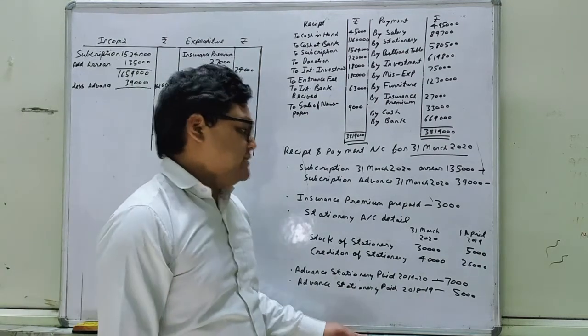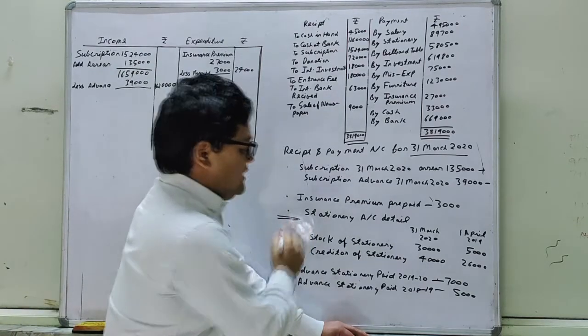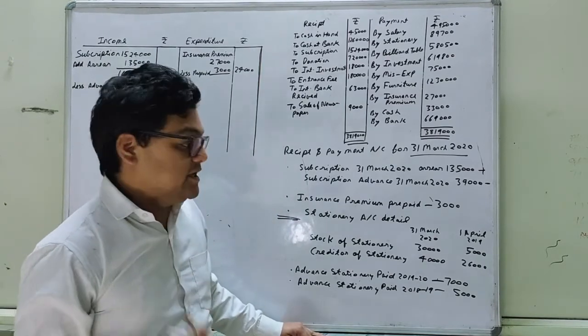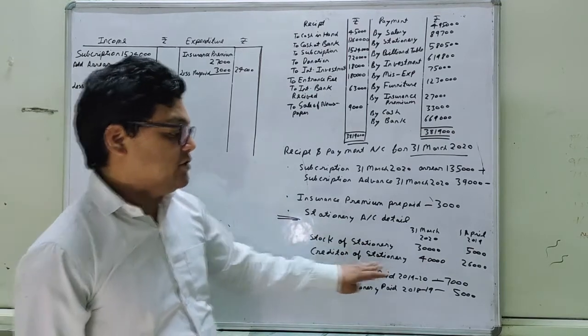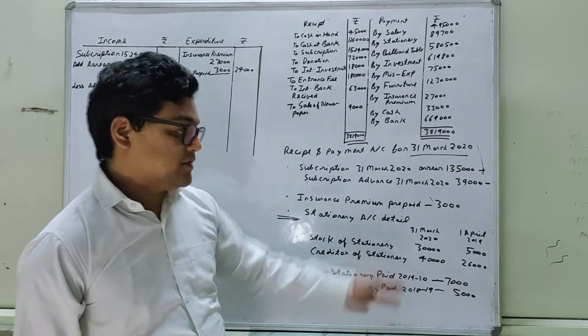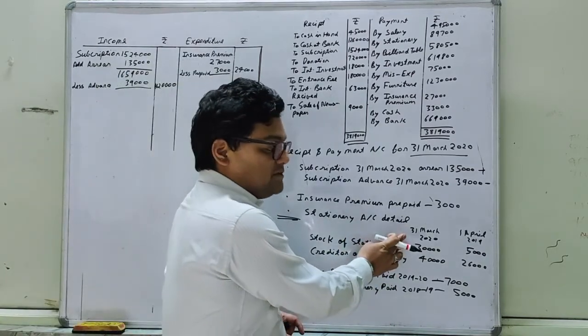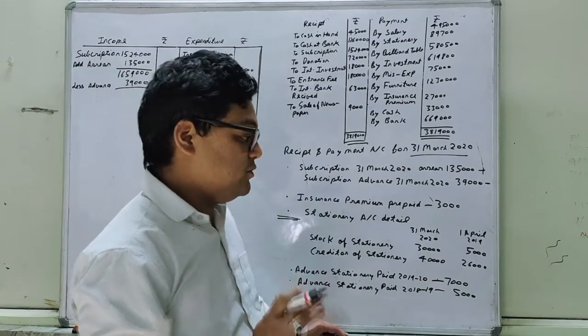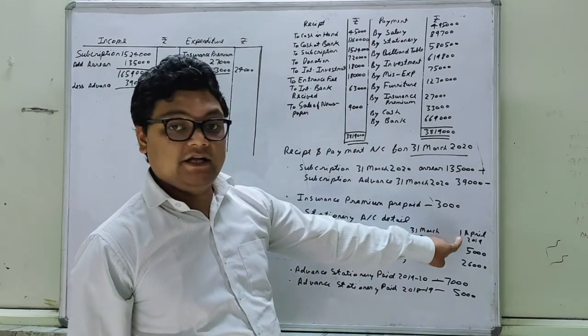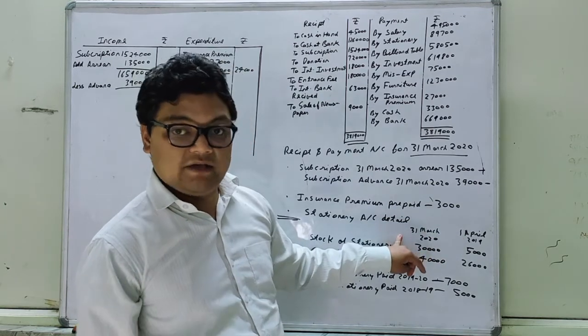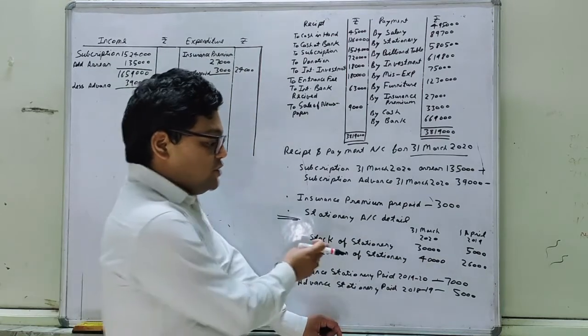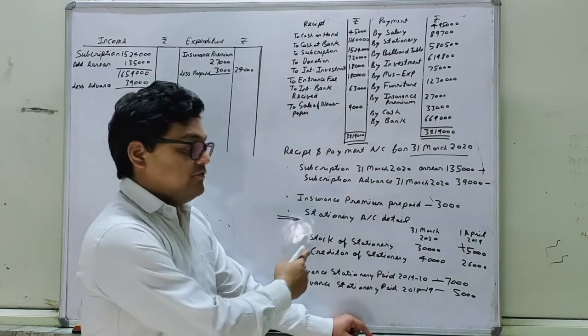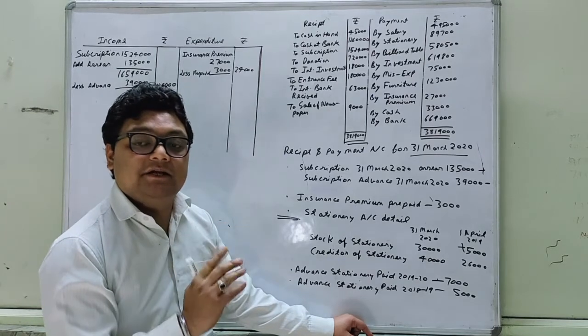Next adjustment is stationary. So this will be your new adjustment. This is not like subscription or prepaid care. Here we have creditor of stationary. Just focus on the date. 31st March 2020 is the current year, 1st April 2019 is the beginning of the year. Here is one year time period, 1st April 2019 is the beginning and 31st March 2020 is the end of the year. This is the stock of stationary at the beginning of the year, beginning stock of stationary add, and at the end it is minus.